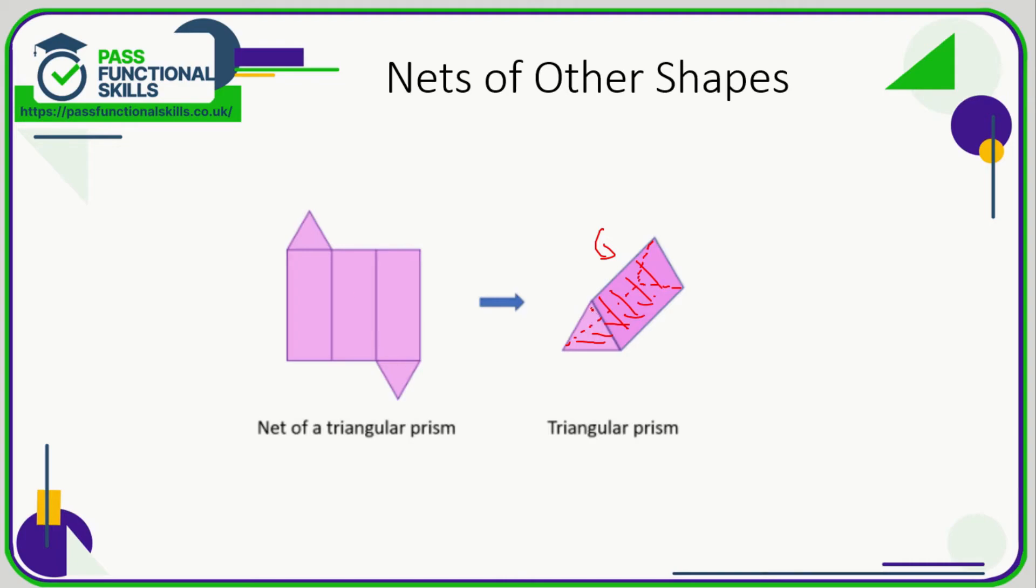Which represents the triangular face here and the triangular face here. Now these triangles don't have to be exactly in this position. The triangles could be here or here, and here or here. But one must be on the top, one must be on the bottom. If they're both on the same side then it's not a correct net.